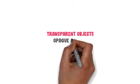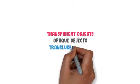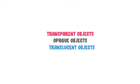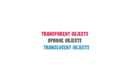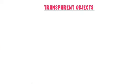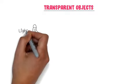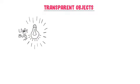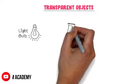What is the difference between transparent, opaque, and translucent objects? Well, firstly, let me teach you transparent objects. For example, consider a luminous object like a bulb. We know that a luminous object produces light.